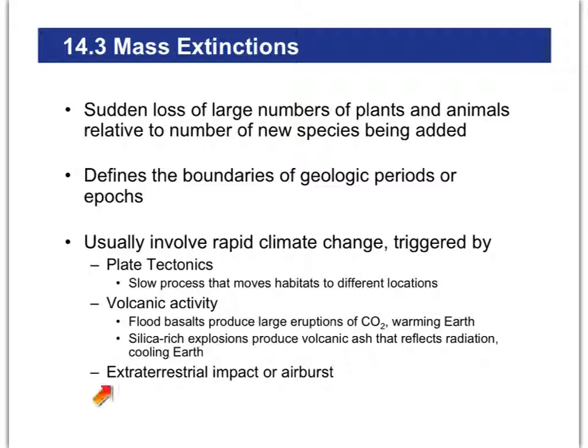Volcanic activity can certainly have an effect on global warming. CO2 is really put out by volcanoes. Volcanic ash can block out the sun — it can deflect or reflect radiation from the sun back out to space, causing the Earth to be a lot colder. And of course an impact or an airburst, if you've got a big enough explosion taking place in the air, it's going to kill off lots of plants and animals regardless of where you live, simply by the shock itself.